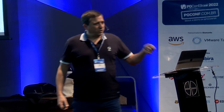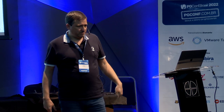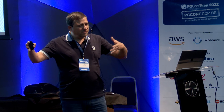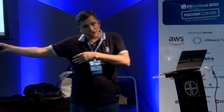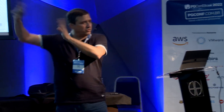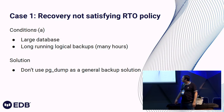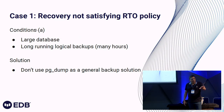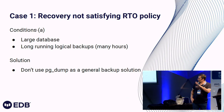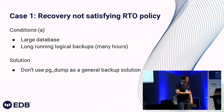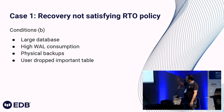PG dump is very useful, for example, for archiving partitioning. You've got partitioning by time, and after three years you want to archive old partitions. You detach the partition, you do a PG dump, and you drop the table — that's useful for that. But in general, I would remove PG dump as a backup solution, even if it's a small database, because of the point-in-time recovery limitation.